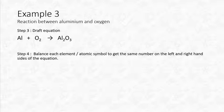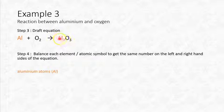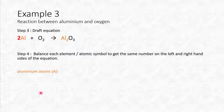Let's balance: aluminium atoms — we have one on the left but two on the right (the subscript 2 tells us there are two aluminium atoms in that molecule). To fix this, we put a 2 in front of Al on the left. Now oxygen: two on the left side, three on the right side.